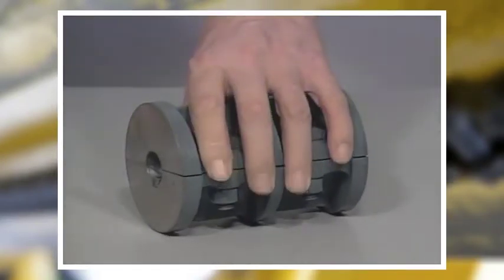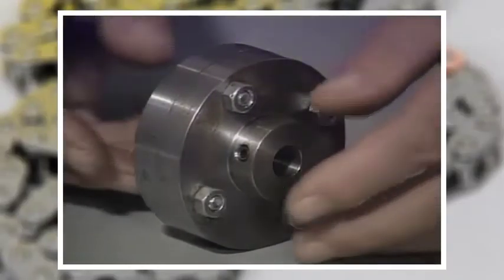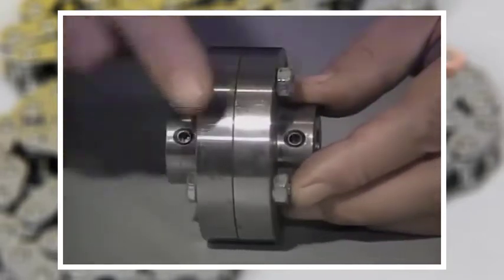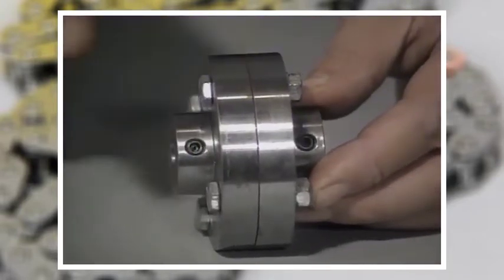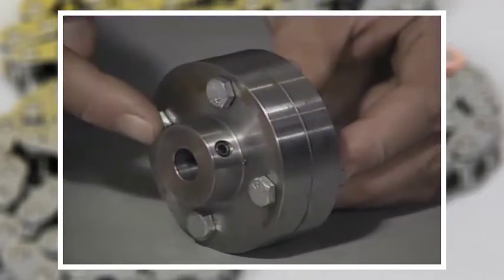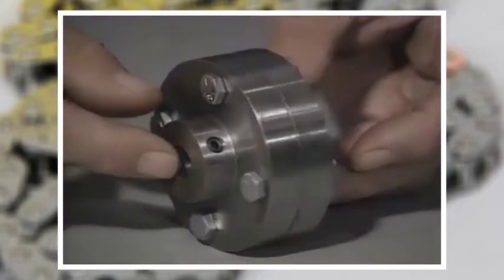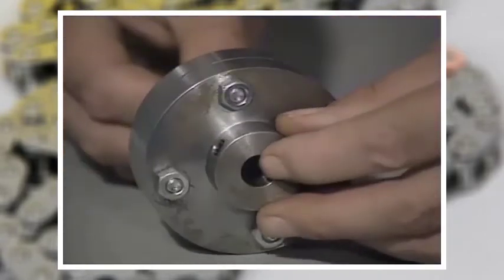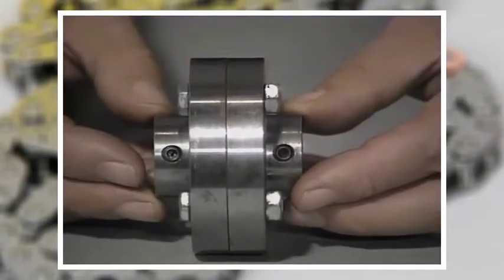The third common rigid coupling is the flange coupling. These couplings have two flanges, one of which is secured to the end of each shaft. Then the two flanges are bolted together to form the coupling. This type of coupling can be used with two shafts of the same size or with shafts of two different sizes by simply boring each flange half to fit its corresponding shaft.